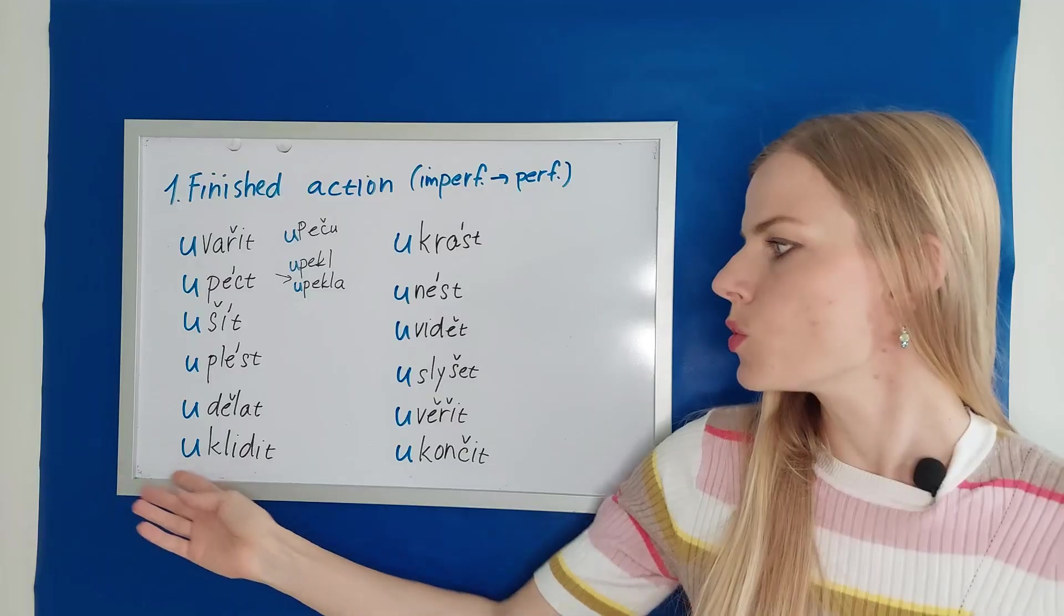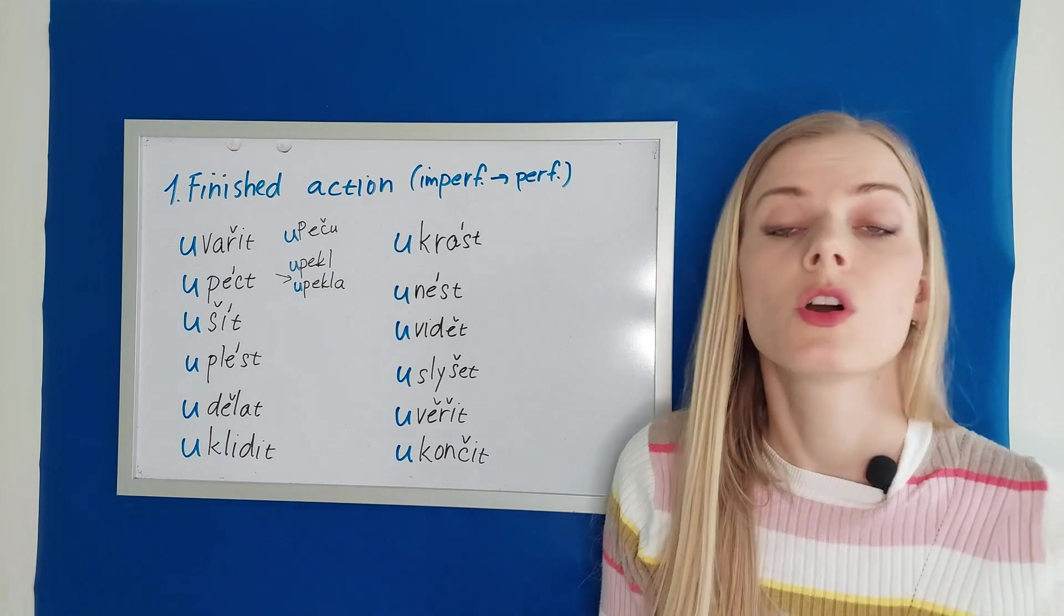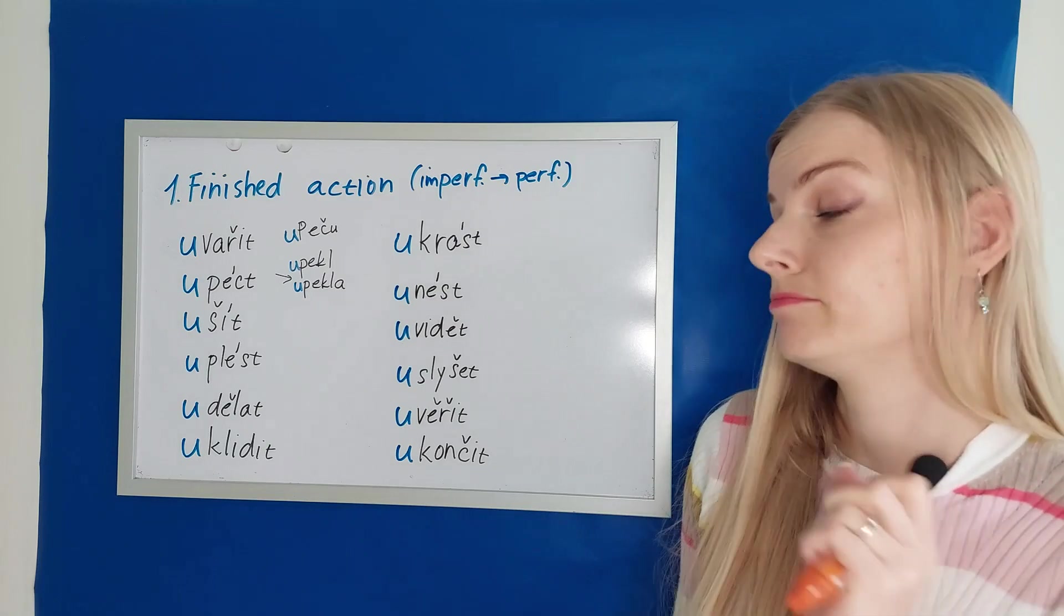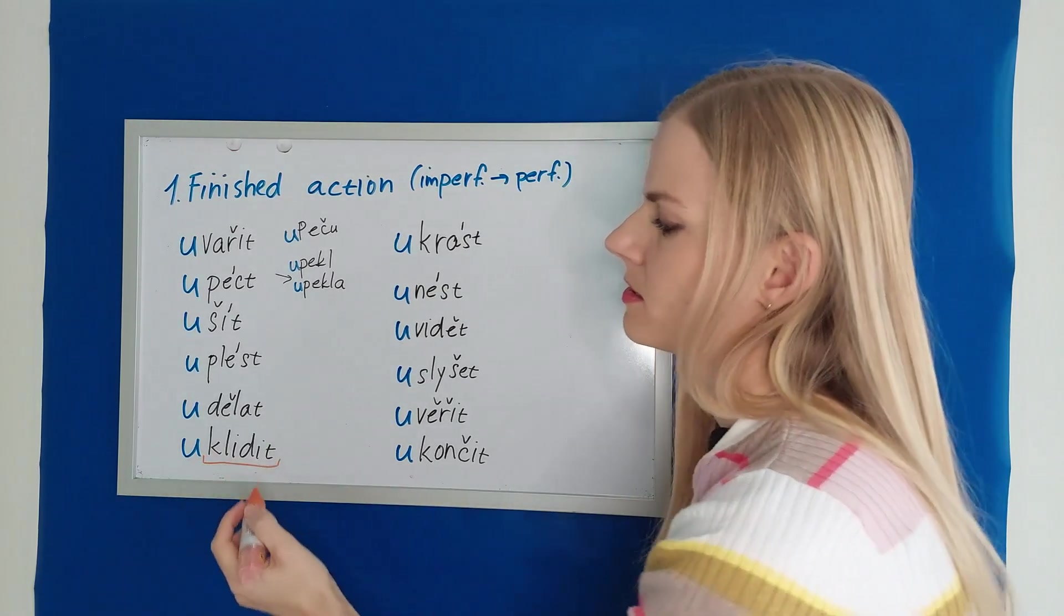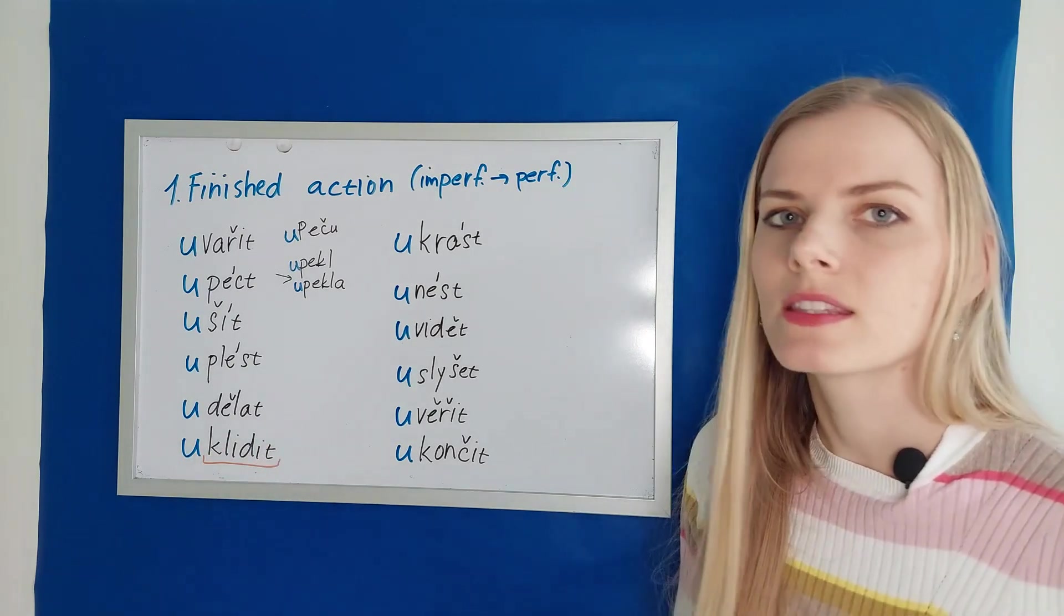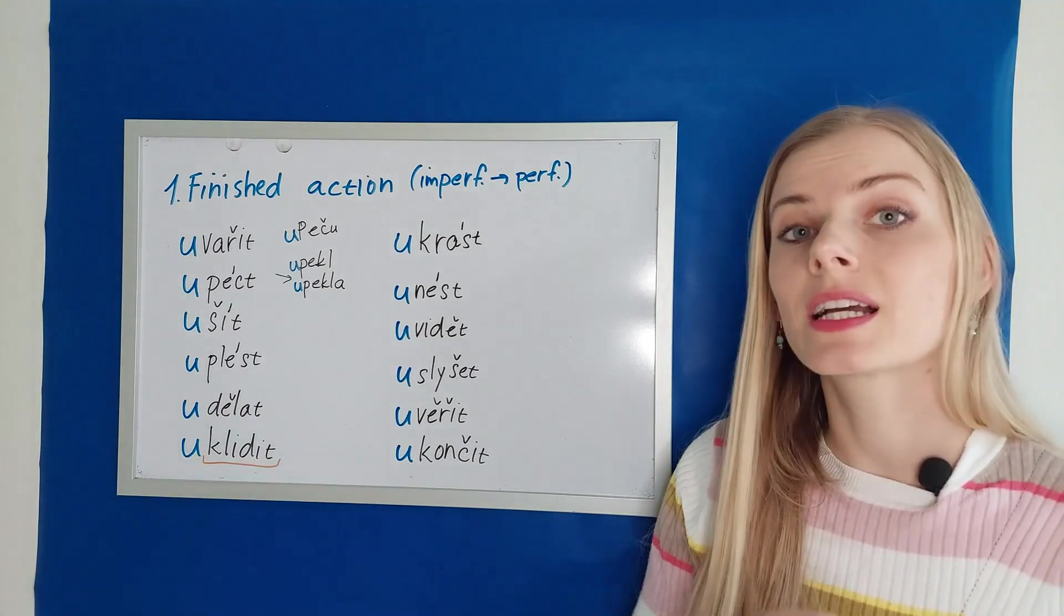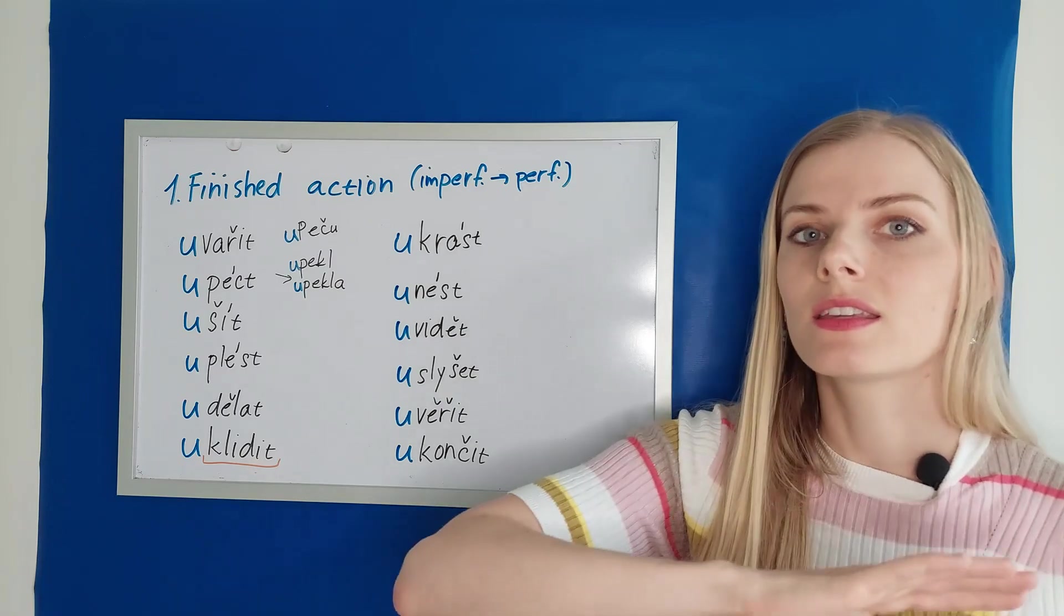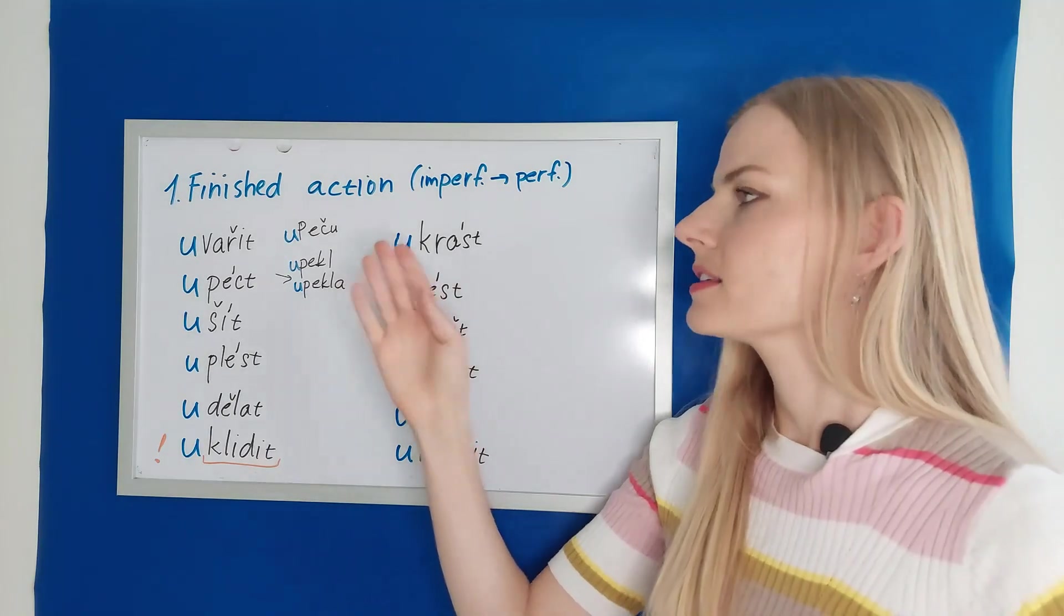Uklidit means to clean up. Clean up the room, for example. Potřebuju uklidit pokoj. But we have to be careful with this one because actually klidit is not a common verb. We don't use it in this form. We say uklízet if you wanted to say the imperfective form. The verb klidit does exist, but it means something else. You can say klidit se. To remove yourself. To go away.